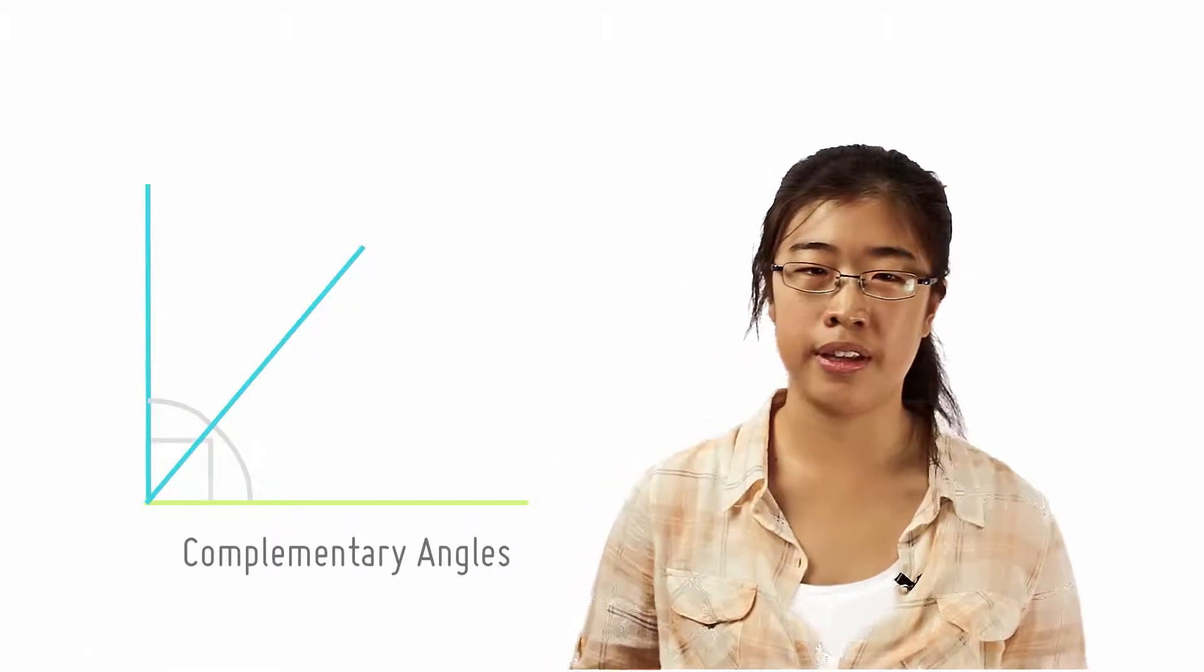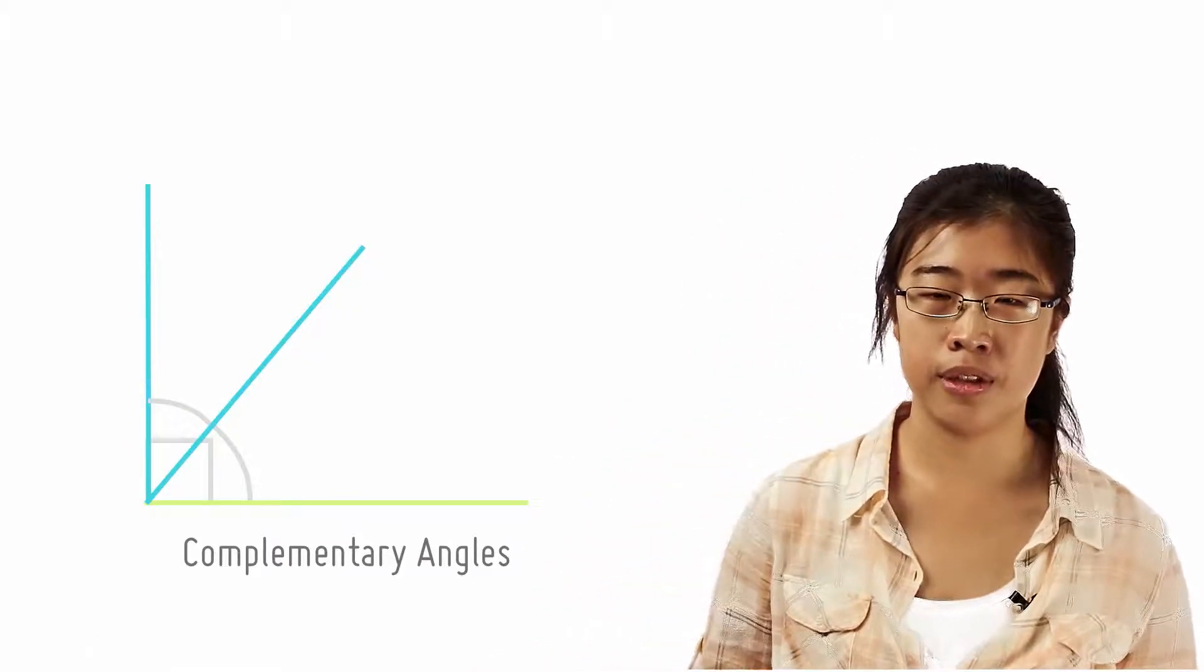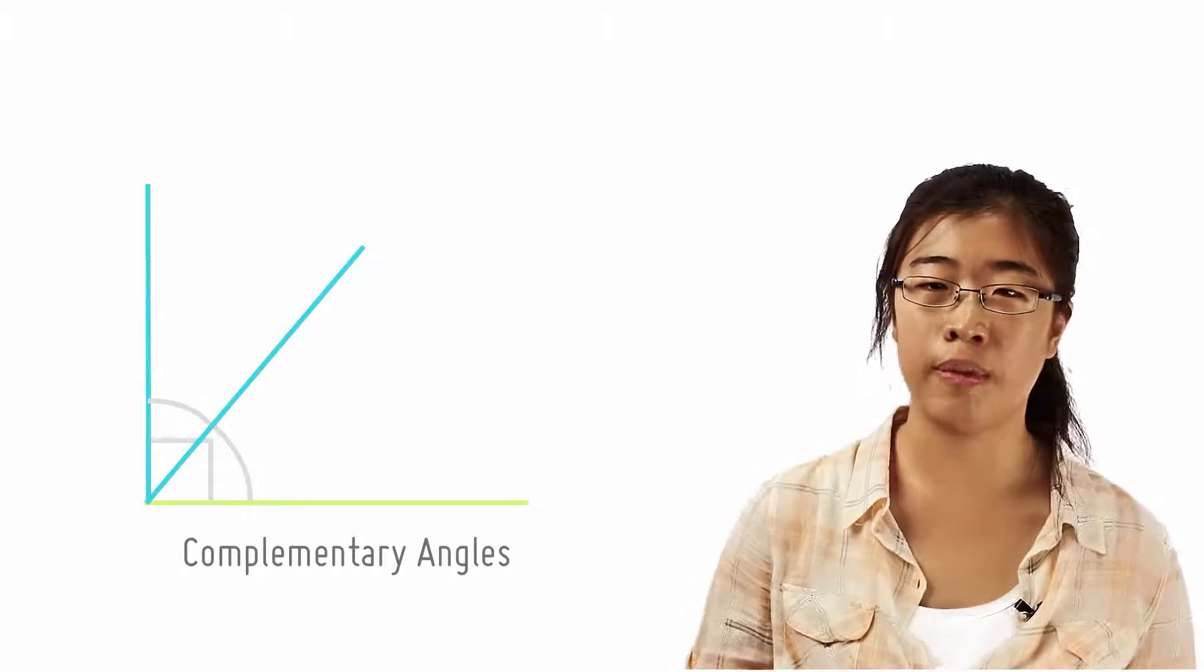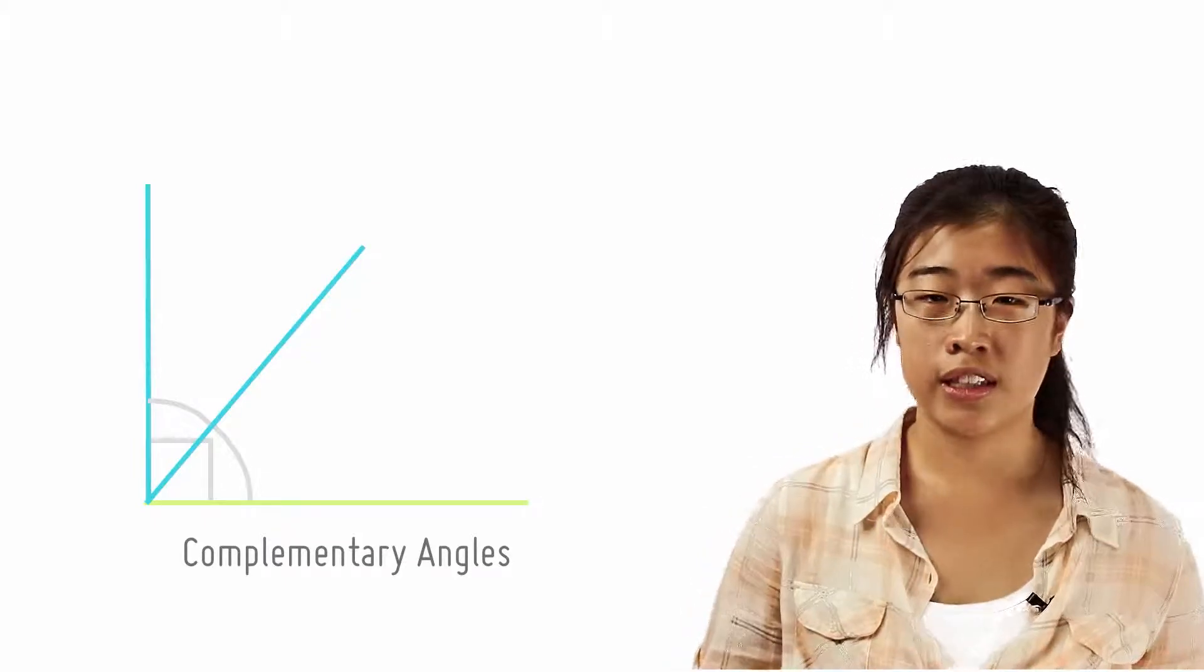Two angles are complementary if the sum of their angles equals 90 degrees. If one angle is known, its complementary angle can be found by subtracting the measure of its angle from 90 degrees.